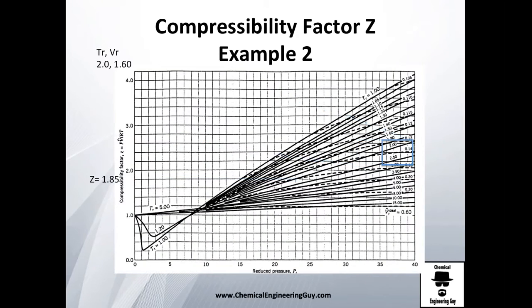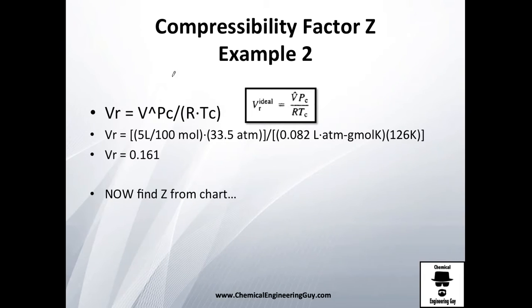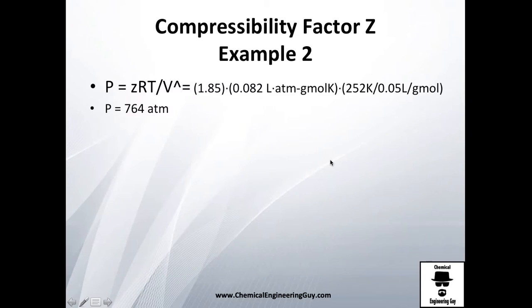Oh sorry, right here I actually never calculated it. I used it here - 5 liters per 100 grams, that's about 0.005 liter per gram. So let me use that, 0.05 liter per gram. And essentially I calculated 764 atmospheres, and that will be my final pressure using the compressibility.